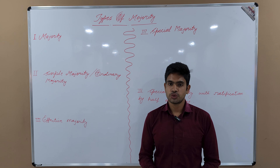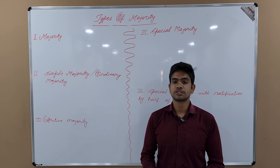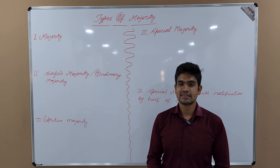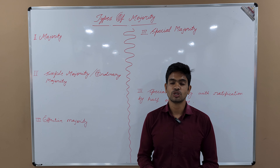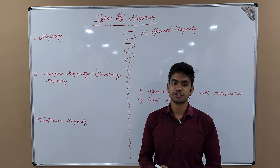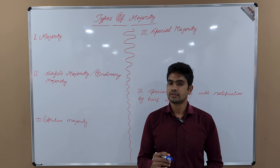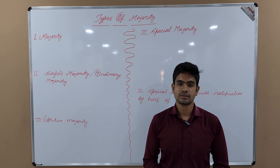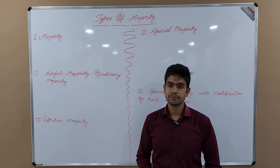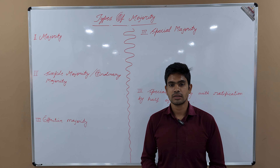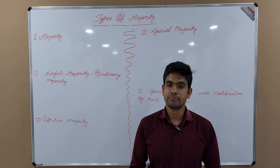Welcome to all of you. In today's video we will learn how many types of majorities are there. When a bill is introduced in either house of the parliament it needs a majority to be passed. Basically there are five types of majority: the first is called majority, the second is simple majority or ordinary majority, the third is effective majority, the fourth is special majority, and the fifth is special majority with ratification by the states.